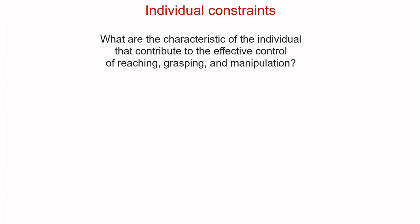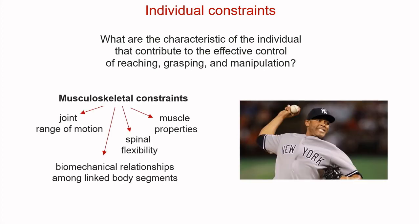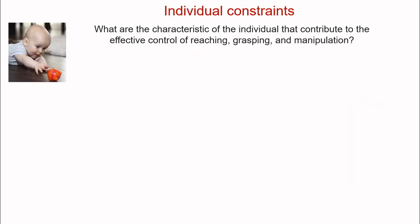Let's switch from task constraints to talking about the constraints within the individual. What are the characteristics of the individual that contribute to effective control of reaching, grasping, and manipulation? To start, we have musculoskeletal constraints, which are the most frequently assessed clinically. These include joint range of motion, biomechanical relationships among linked body segments, spinal flexibility, and muscle properties. Beyond musculoskeletal constraints, we will focus on neural constraints.